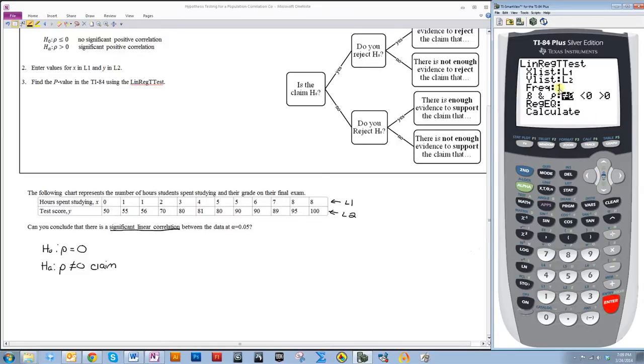Make sure frequency says 1. And then pick the alternative hypothesis. In this case, I'm using the not equal to one, so I'm going to leave that there. You can skip this piece here. And go down to calculate. Enter.